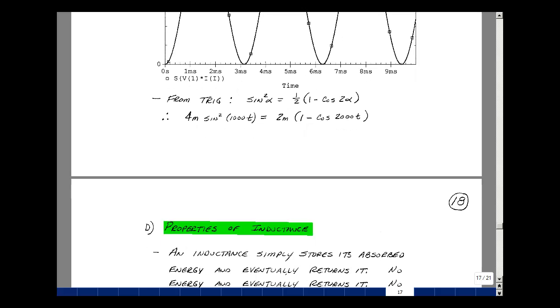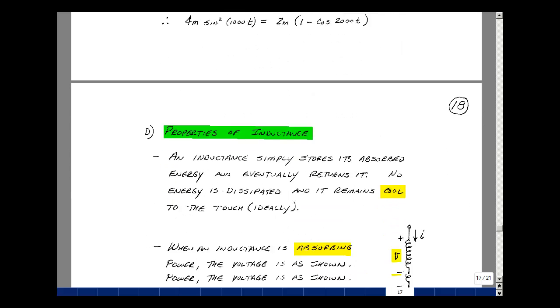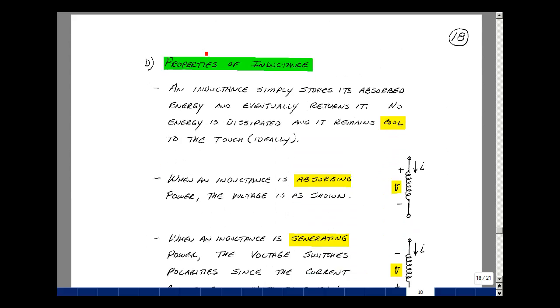Maybe draw some conclusions from these graphs and some of our definitions. Inductance can simply store its absorbed energy and eventually can return it. There is no energy dissipated in an ideal inductance, and so the coil would remain cool to the touch.